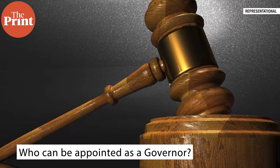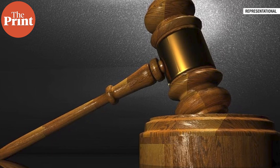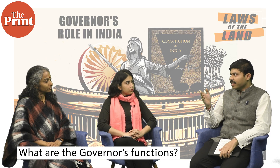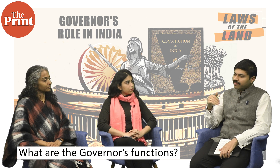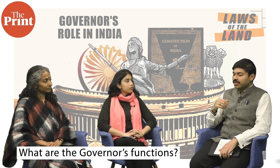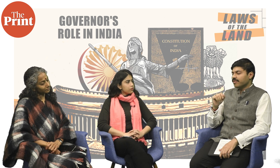A governor is appointed by the president, so there is the doctrine of pleasure — a governor holds office for a tenure of five years or earlier during the pleasure of the president. The president is both the appointing and removing authority. A governor primarily has three major functions: legislative, executive, and judicial. Judicial functions include clemency — pardon — and appointing high court judges, among others.